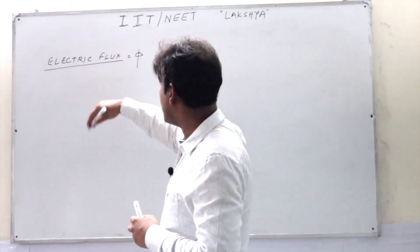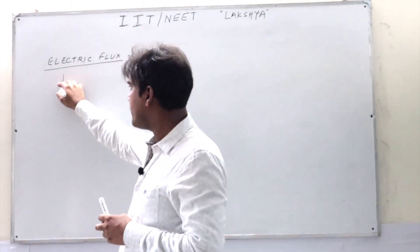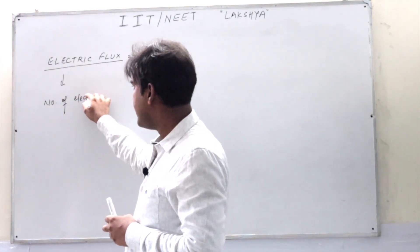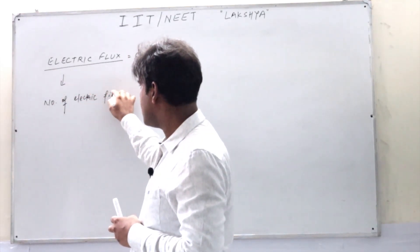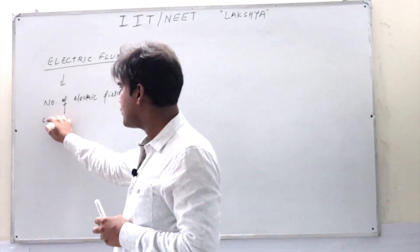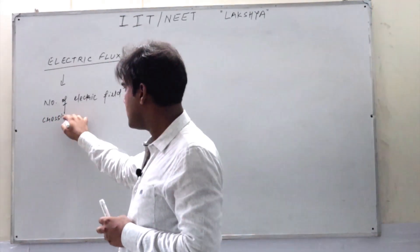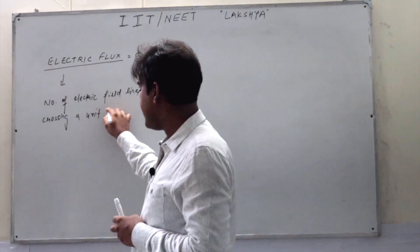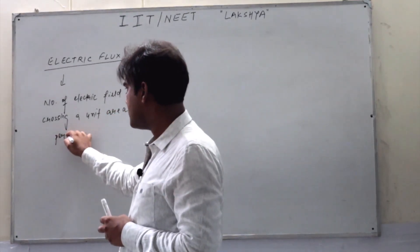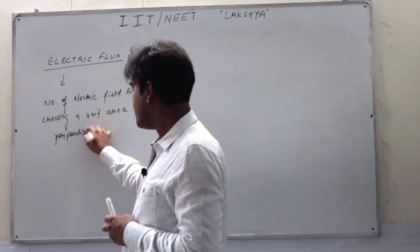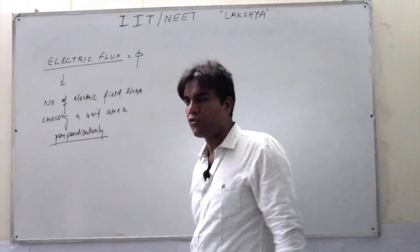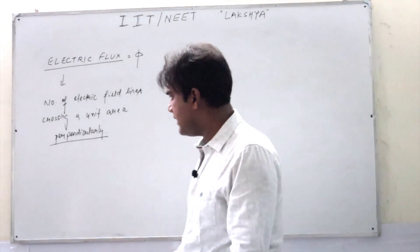Electric flux is a scalar quantity denoted as phi. The meaning is very simple: it is the number of electric field lines crossing a unit area perpendicularly. What is important here is the word 'perpendicularly' — field lines crossing a unit area perpendicularly.